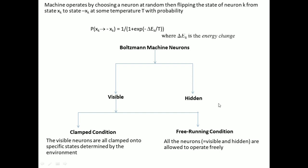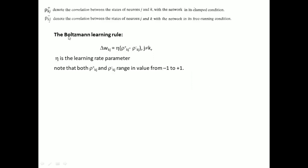Now let's see how the weights are updated in Boltzmann learning. ρ_kj^+ denotes the correlation between the states of neuron j and neuron k with the network in the clamped condition, and ρ_kj^- denotes the correlation with the network in its free-running condition.